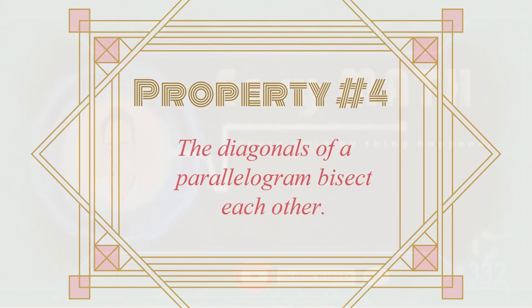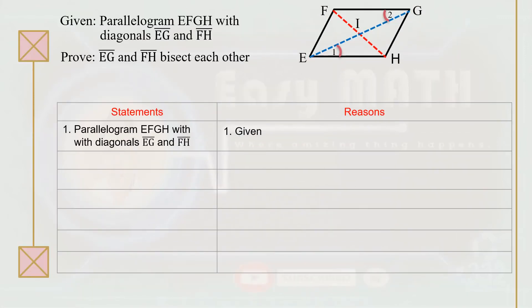Property number four: the diagonals of a parallelogram bisect each other. In this two-column proof, we're going to prove that the diagonals of a parallelogram bisect each other. Given parallelogram EFGH with diagonals EG and FH, we're going to prove that segment EG and segment FH bisect each other.